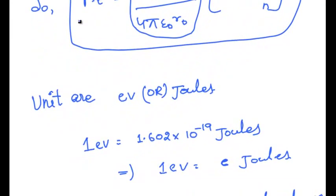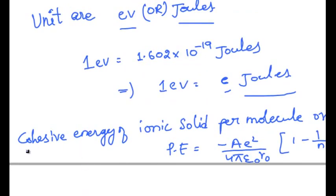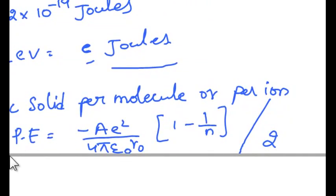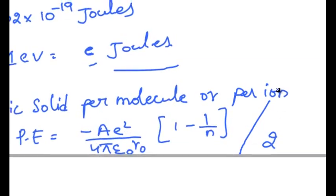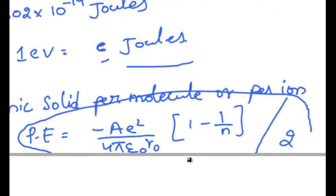The units of potential energy, cohesive energy, or dissociation energy of ionic solid are electron volts or joules. 1 electron volt is equal to 1.602 into 10 power minus 19 joules. So finally, the cohesive energy of ionic solid per molecule or per ion is equal to minus a e square by 4 pi epsilon not into r naught into 1 minus 1 by n, whole divided by 2.